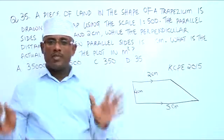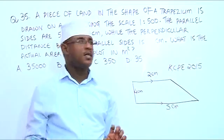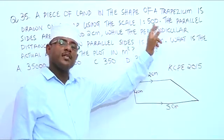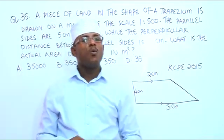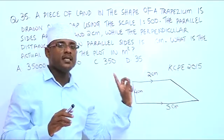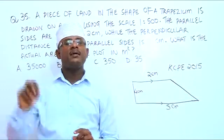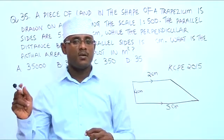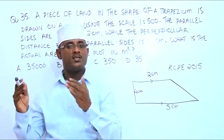Whatever measurement you're going to use, the actual distance is multiplied by 500. So if you have got 1 centimeter, the actual distance will be 500. If you have got 2 centimeters, then the actual distance will be 2 centimeters multiplied by 500, which gives us 1,000 centimeters. If you measured 3 centimeters, the actual distance will be 3 centimeters multiplied by 500, giving 1,500 centimeters.